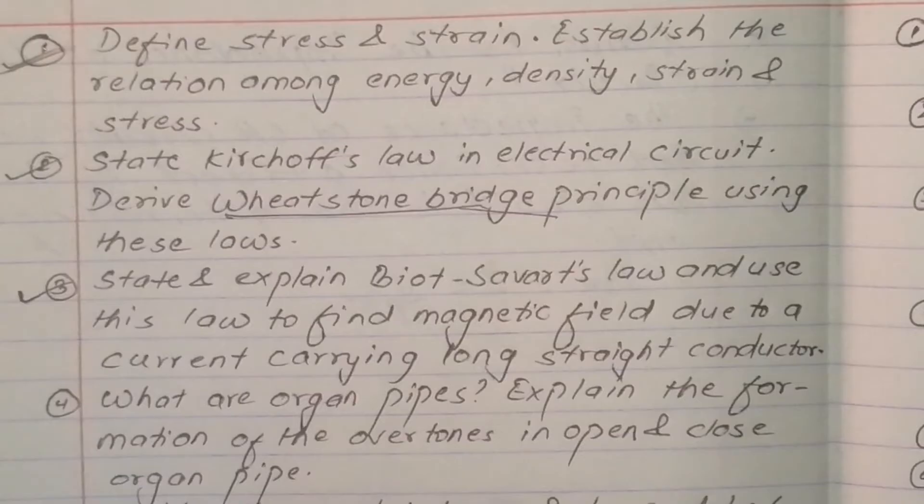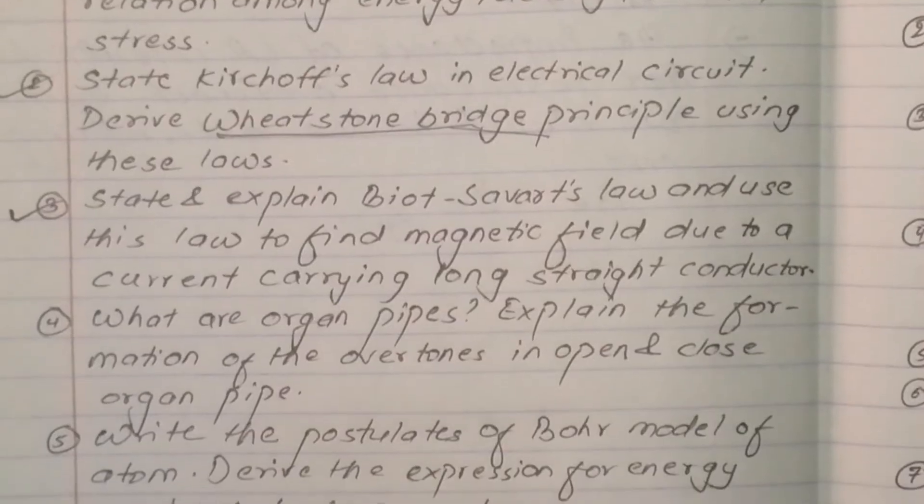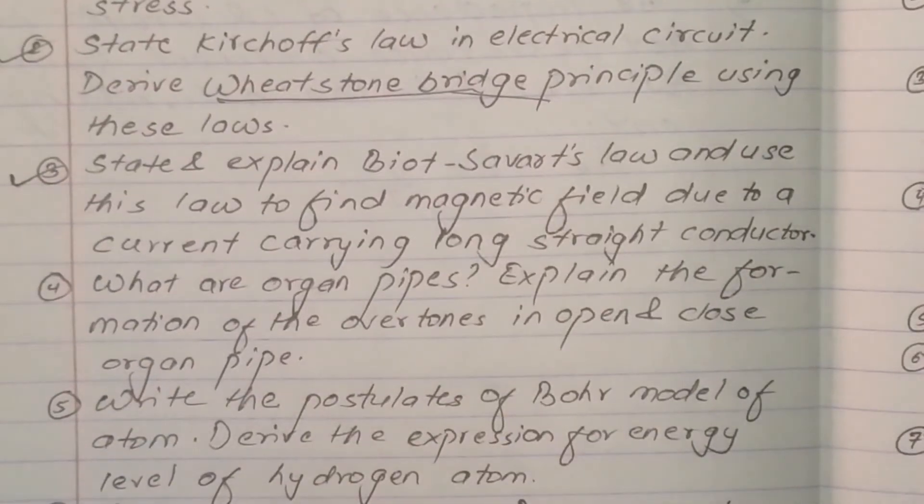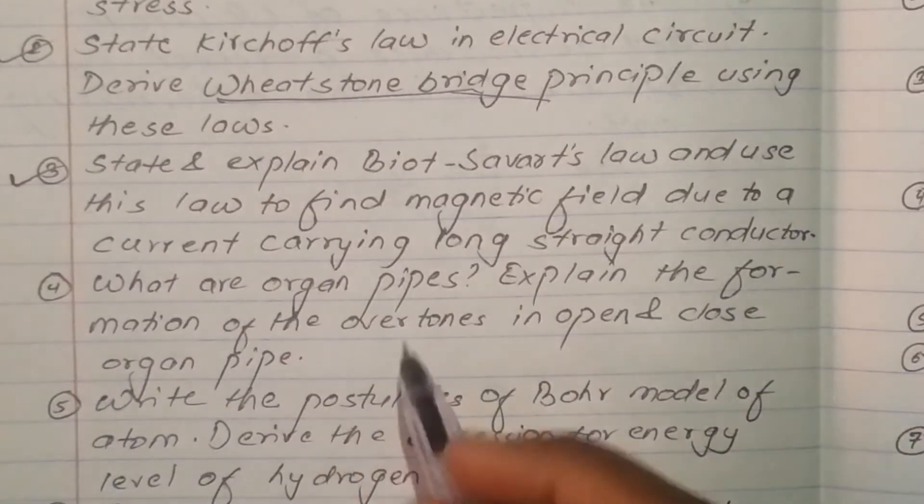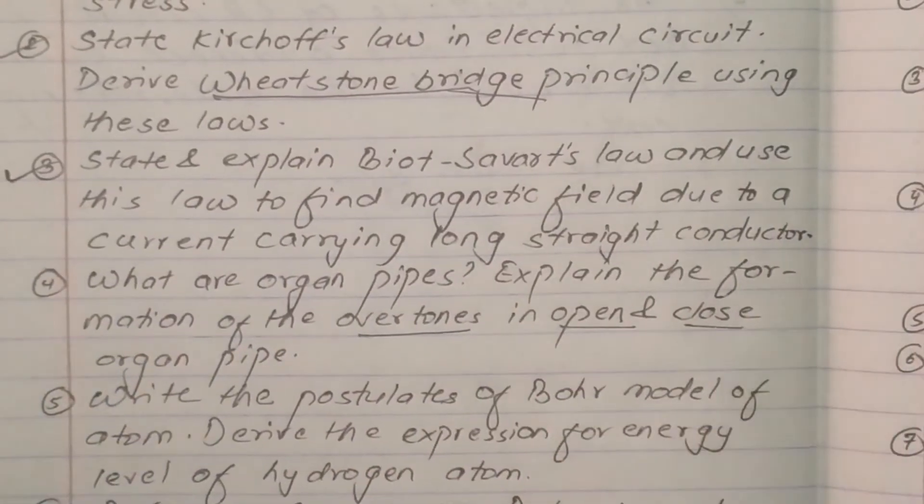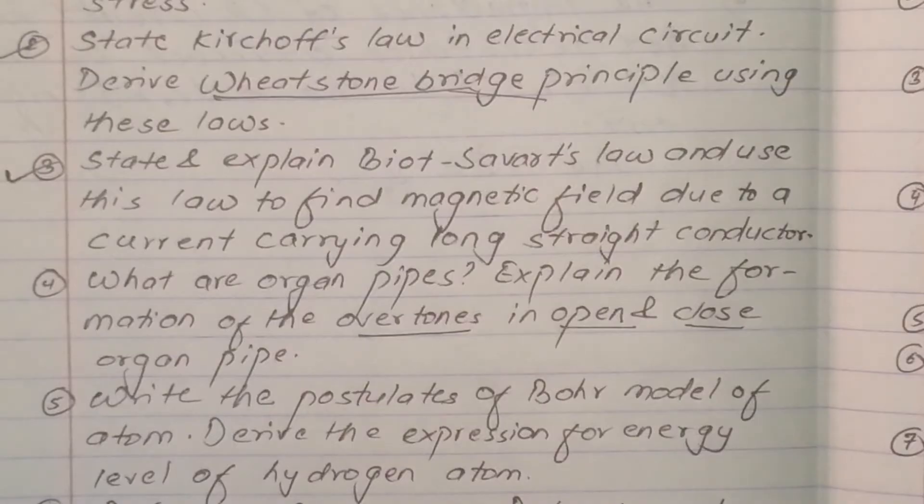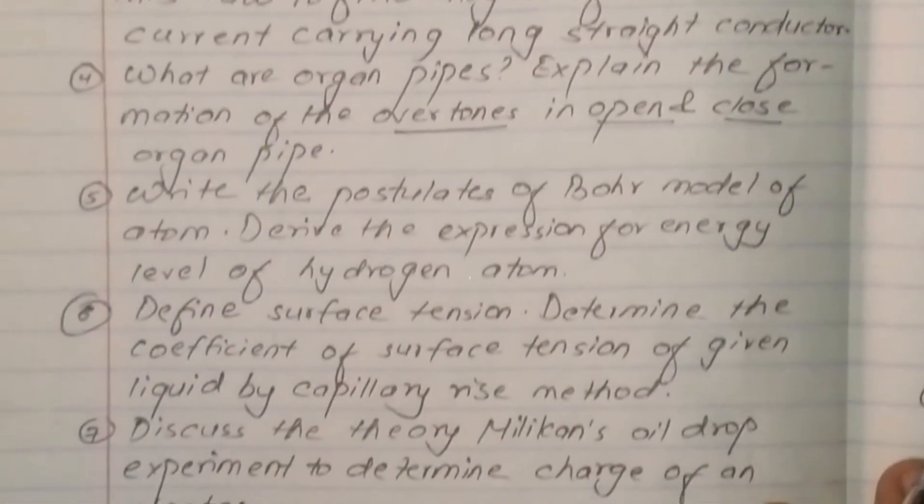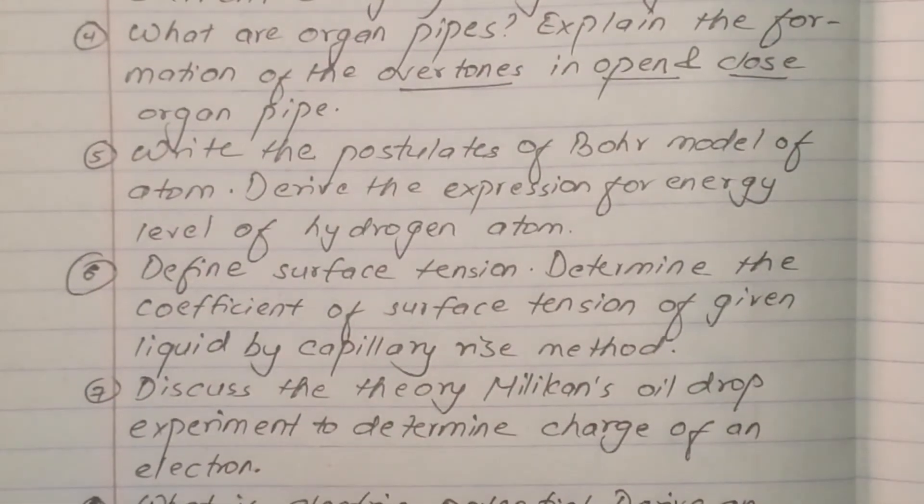Question number four: What are organ pipes? Explain the formation of overtones in open and closed organ pipe. Describe Bohr's model of atoms.